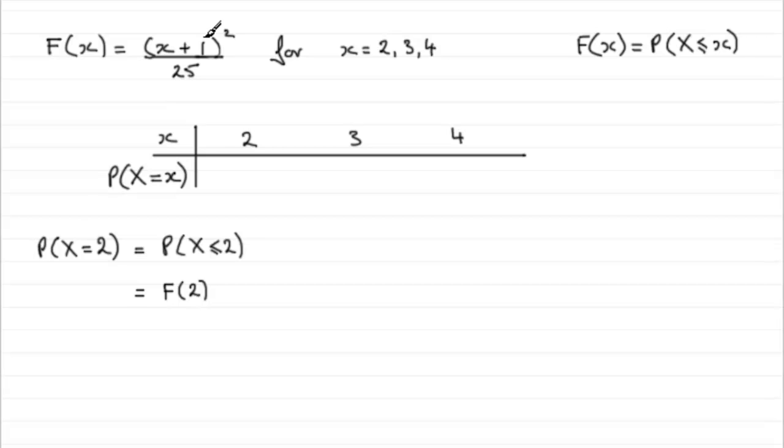Now I've put the k value that we found earlier into the formula for the f of x here, our cumulative distribution function. And so all I've got to do is just substitute this 2 into here. So we're going to have that this equals 2 plus 1, I'll write that in anyway, 2 plus 1, all squared, all divided by 25.